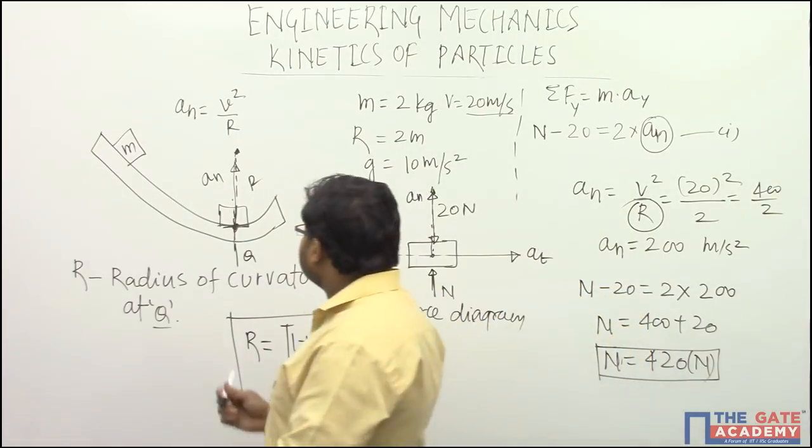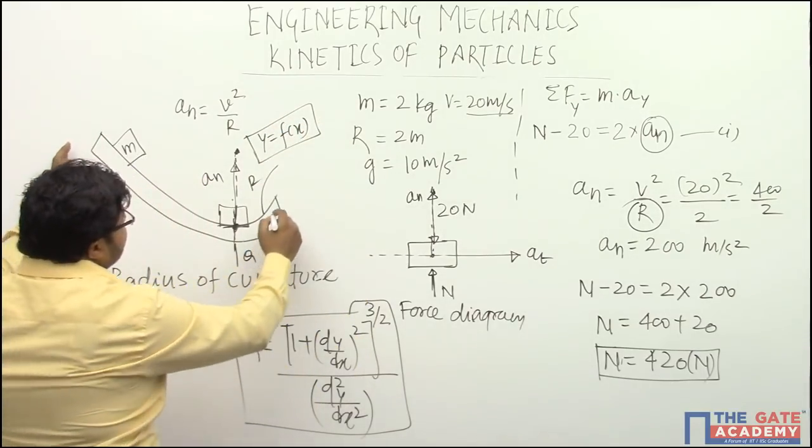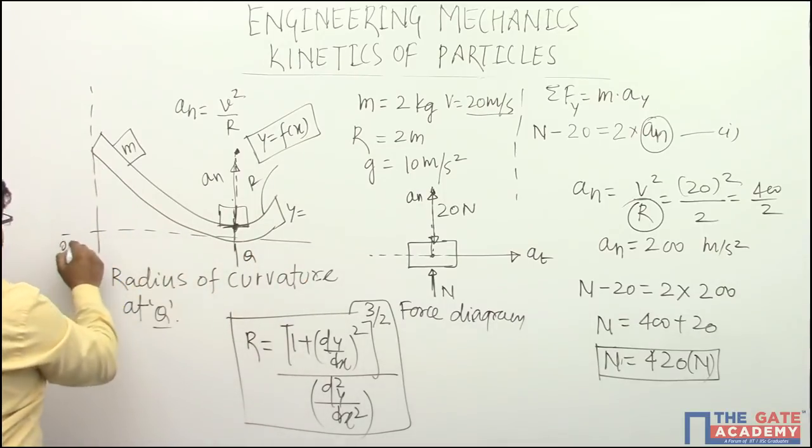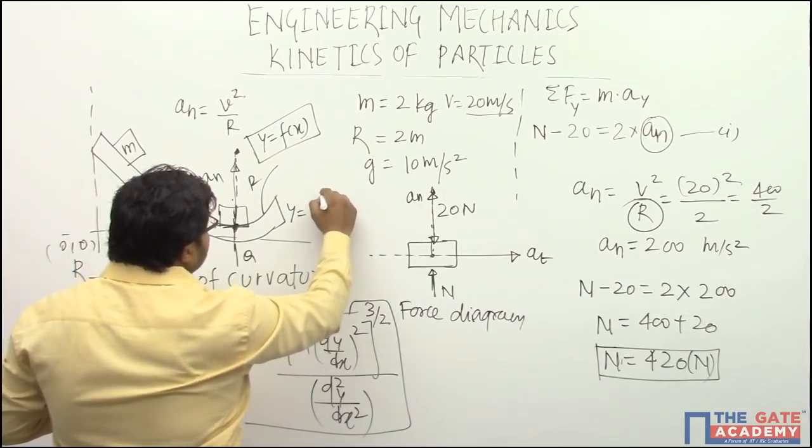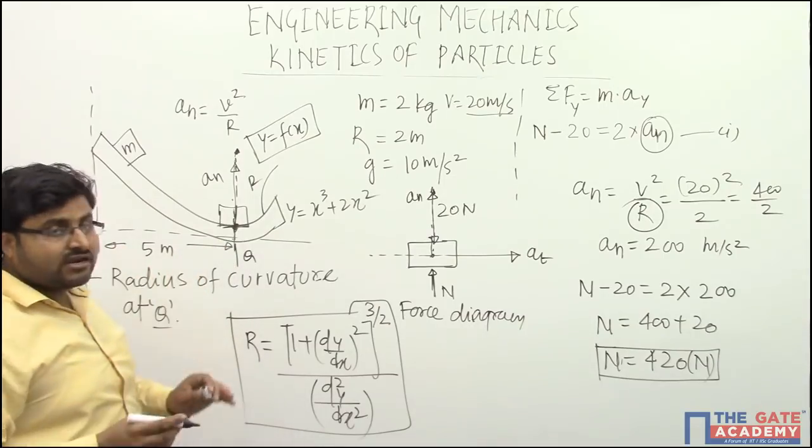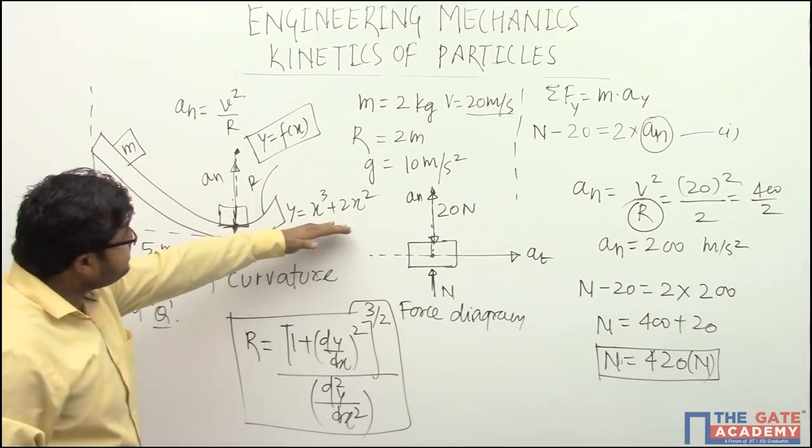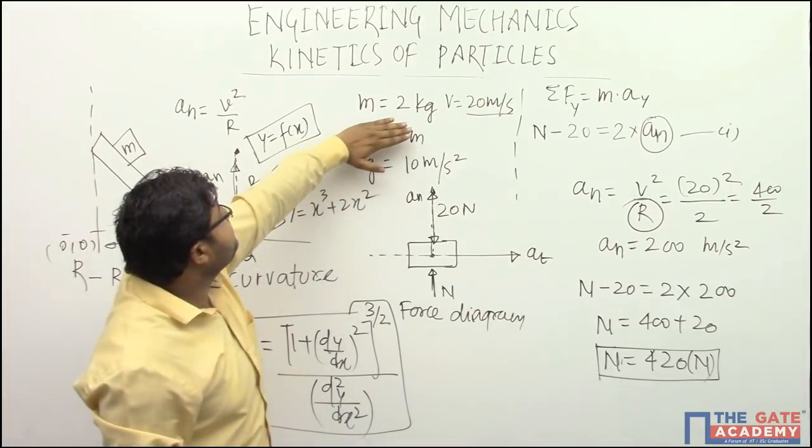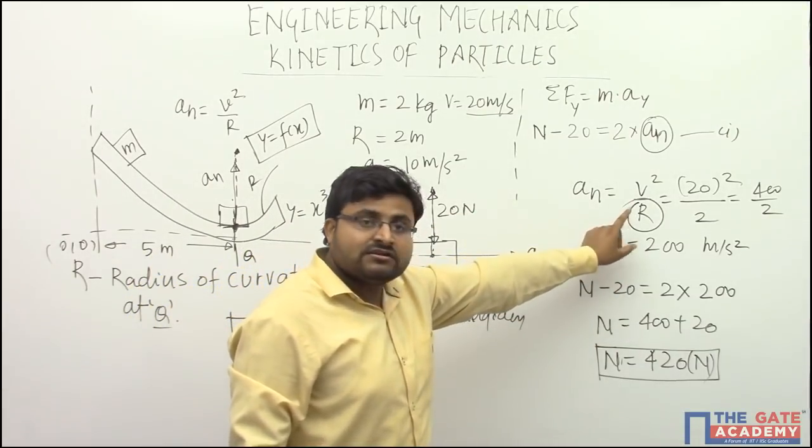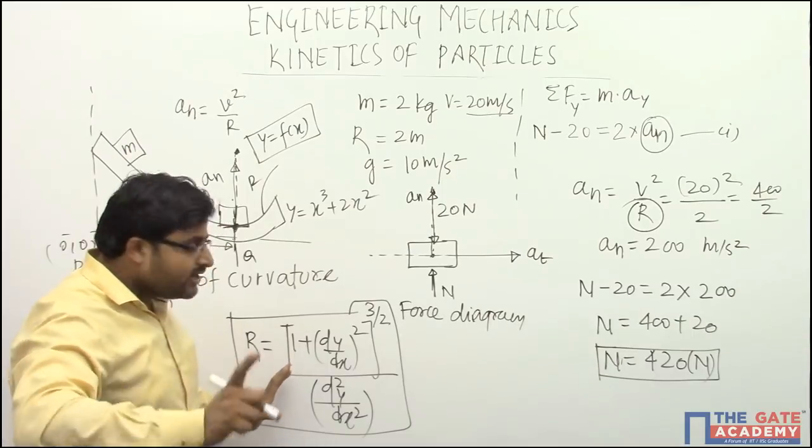When this curve will be given as a function of x, here they will give y as a function of x. Suppose they can give y as x cube plus 2x square like this, and from here to here it is 5 meter. All other things they will keep same except one change. They will give some graphical representation and y as a function of x and at the same time they will not give this radius of curvature to you. But in order to get this normal reaction we definitely need that radius of curvature.